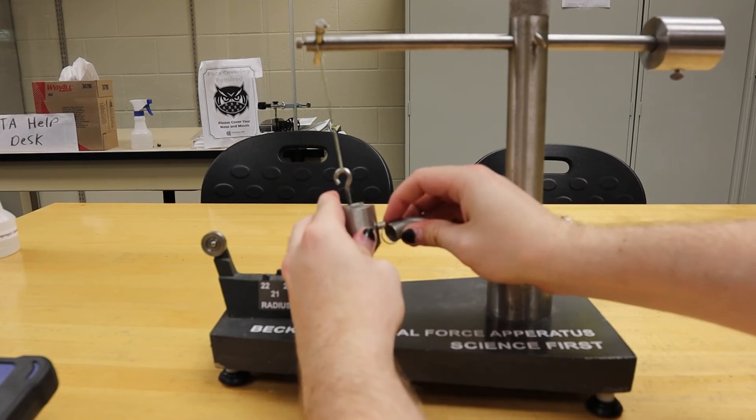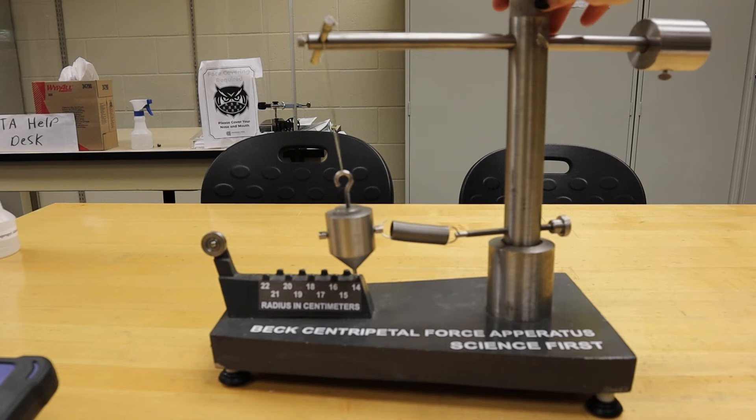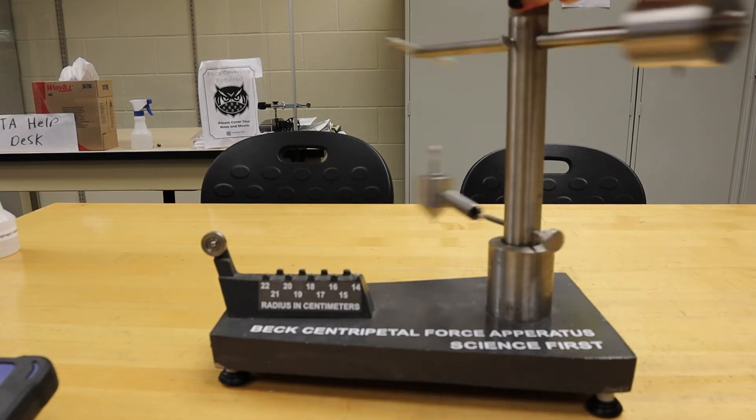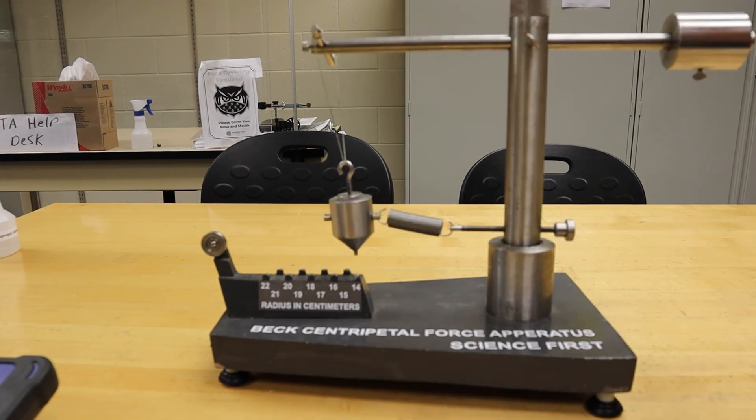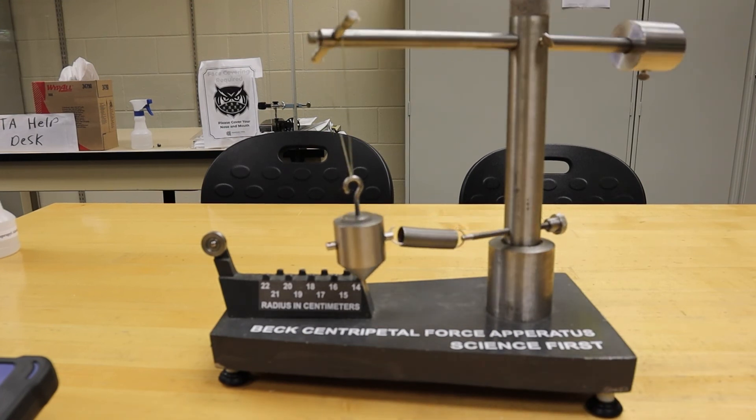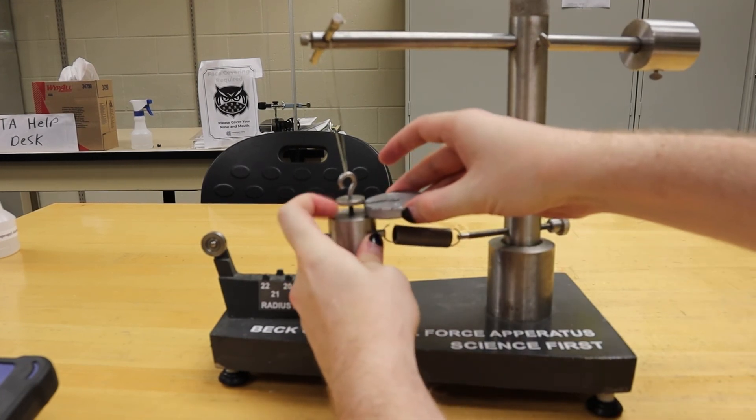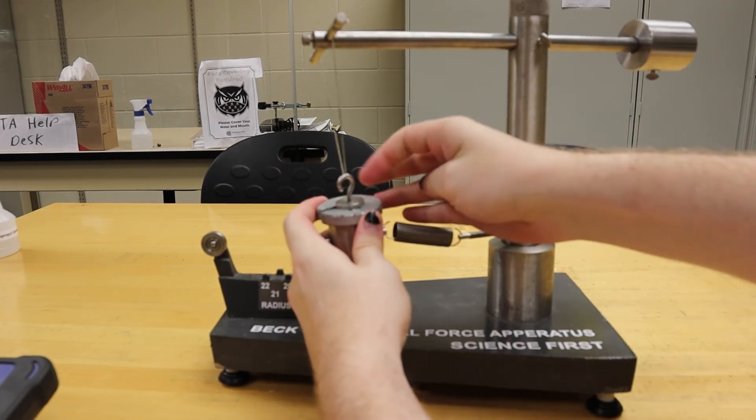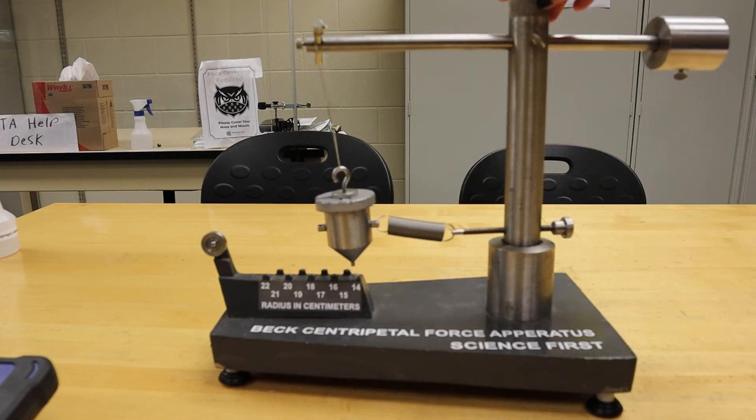We will then re-hook the spring and repeat the process of measuring the amount of time it takes for 30 oscillations at this new radius. We will then re-add the mass to the system and repeat this process one more time.